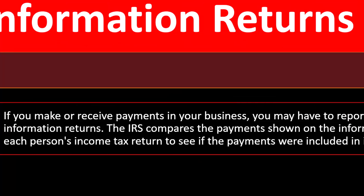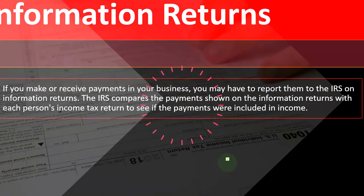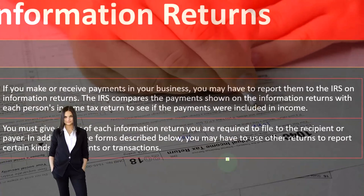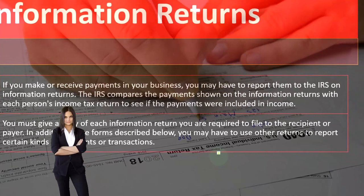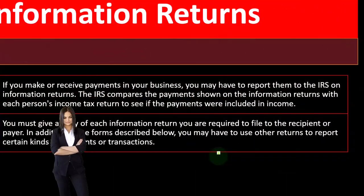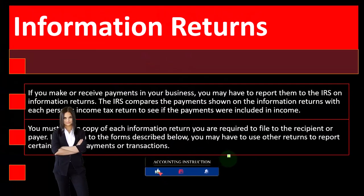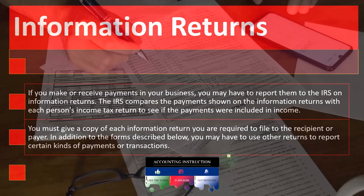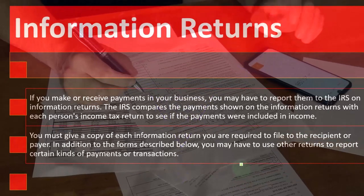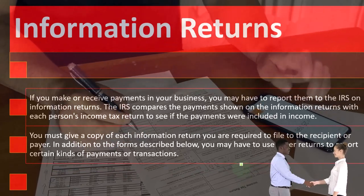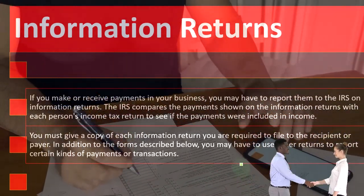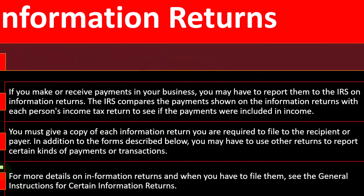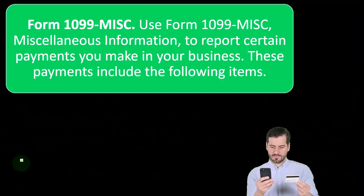The IRS compares payments shown on information returns with each person's income tax return to see if the payments were included in income. You must give a copy of the information return you are required to file to the recipient or payer. When you think about 1099 forms and W-2 forms, we think about them as something we give to the person who did the work to help them generate their tax return. But what the IRS really wants is for you to give that information to the government so they can double-check that the person is reporting that income on their taxes. For more details, see the general instructions for certain information returns on the IRS website.